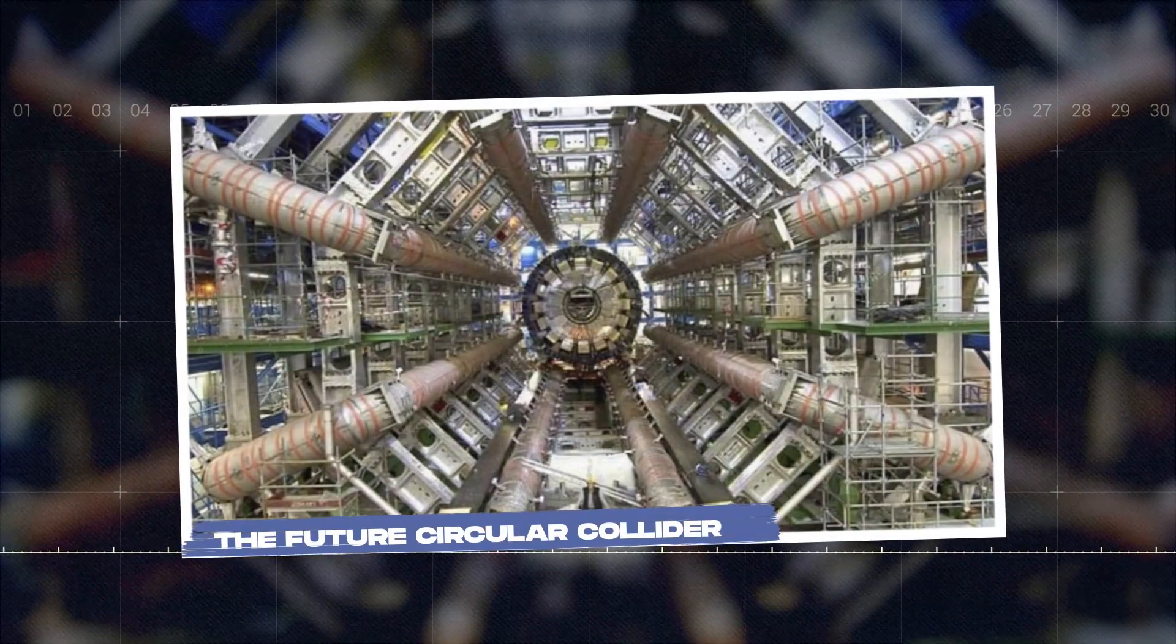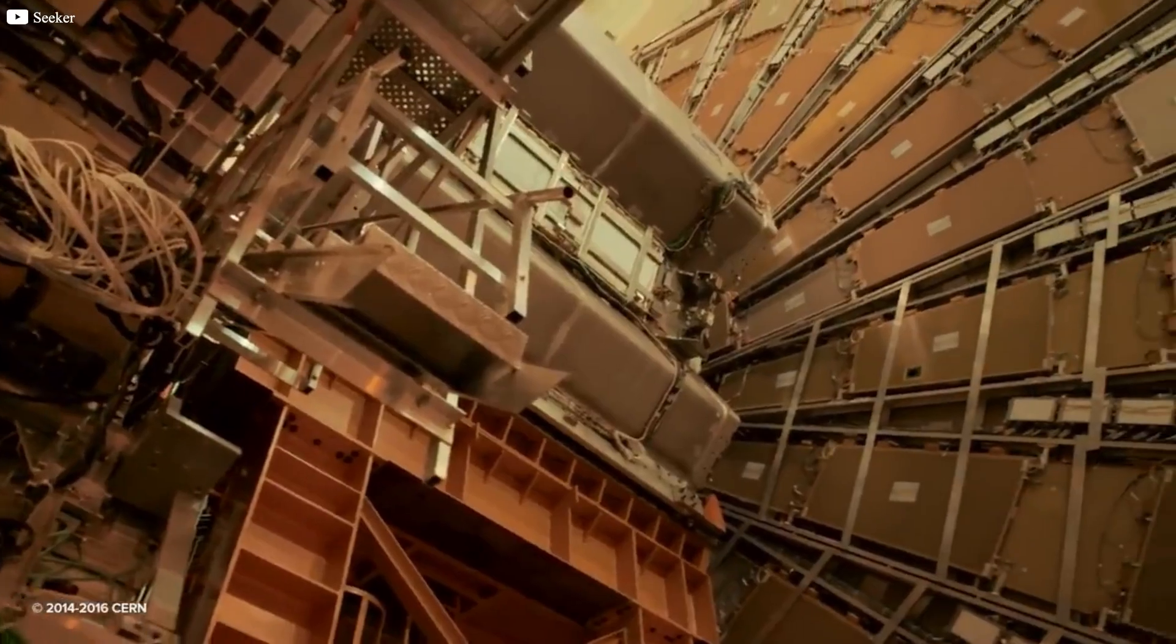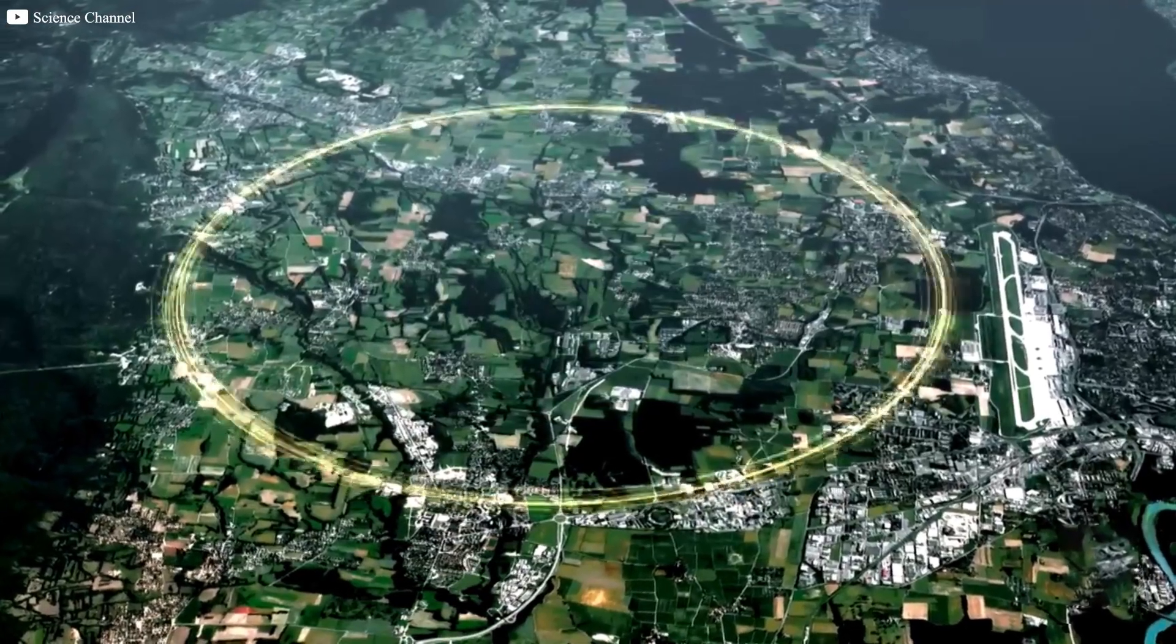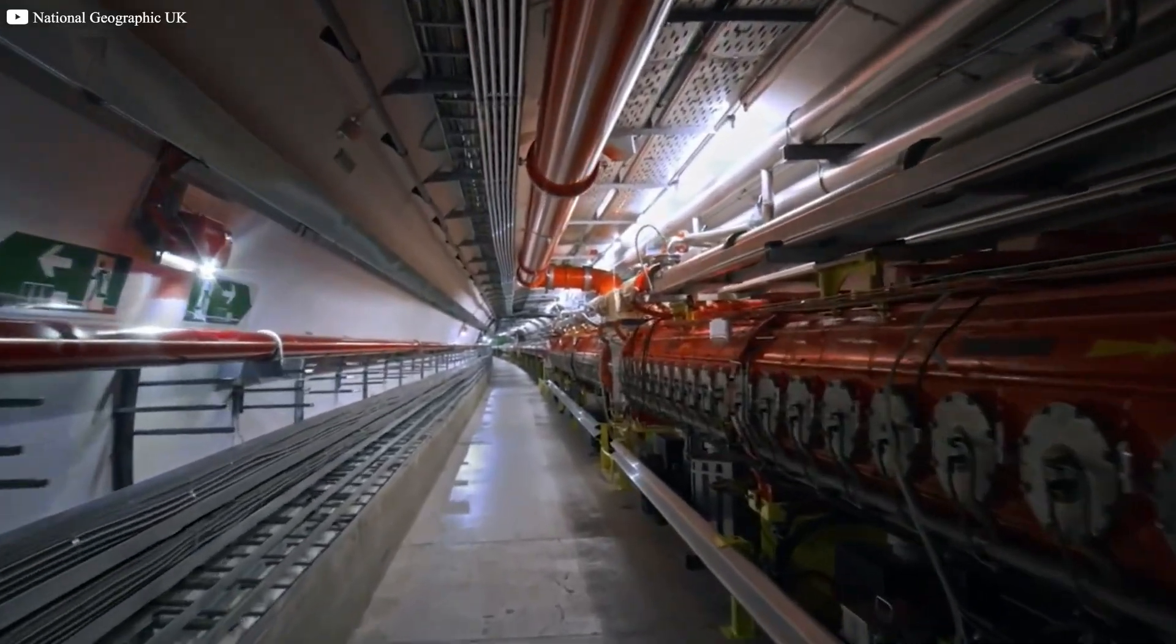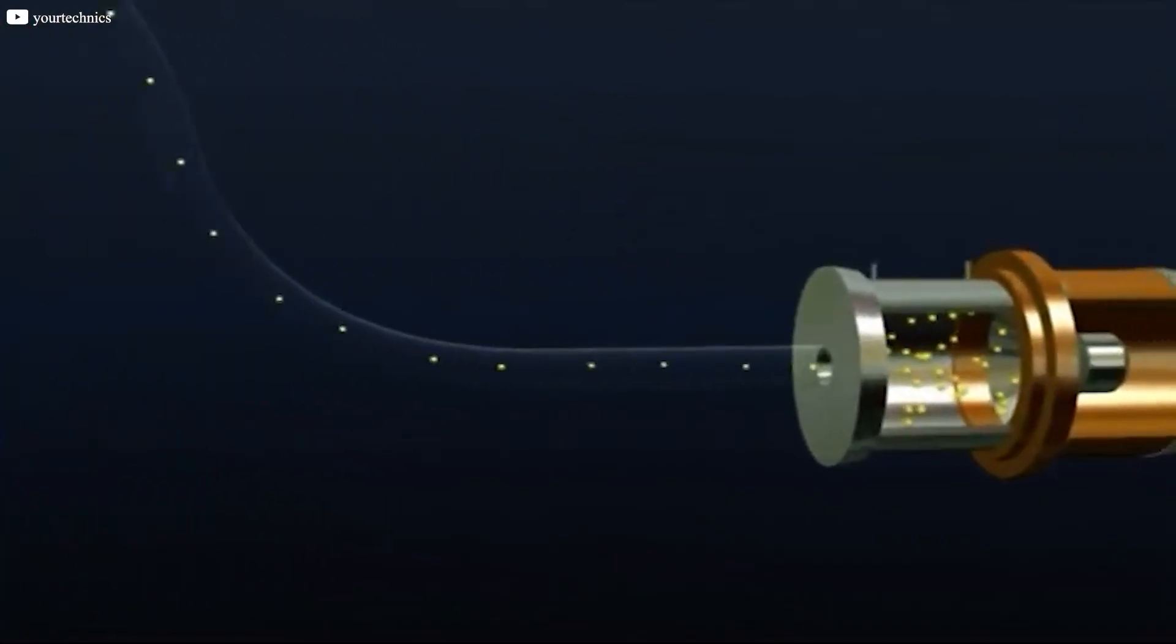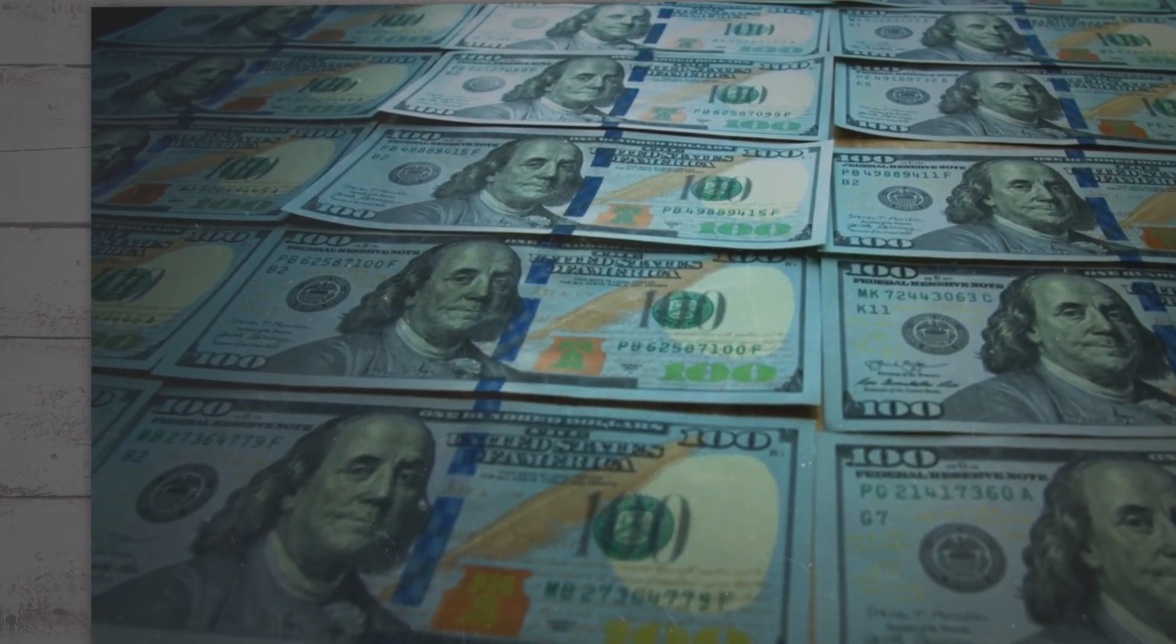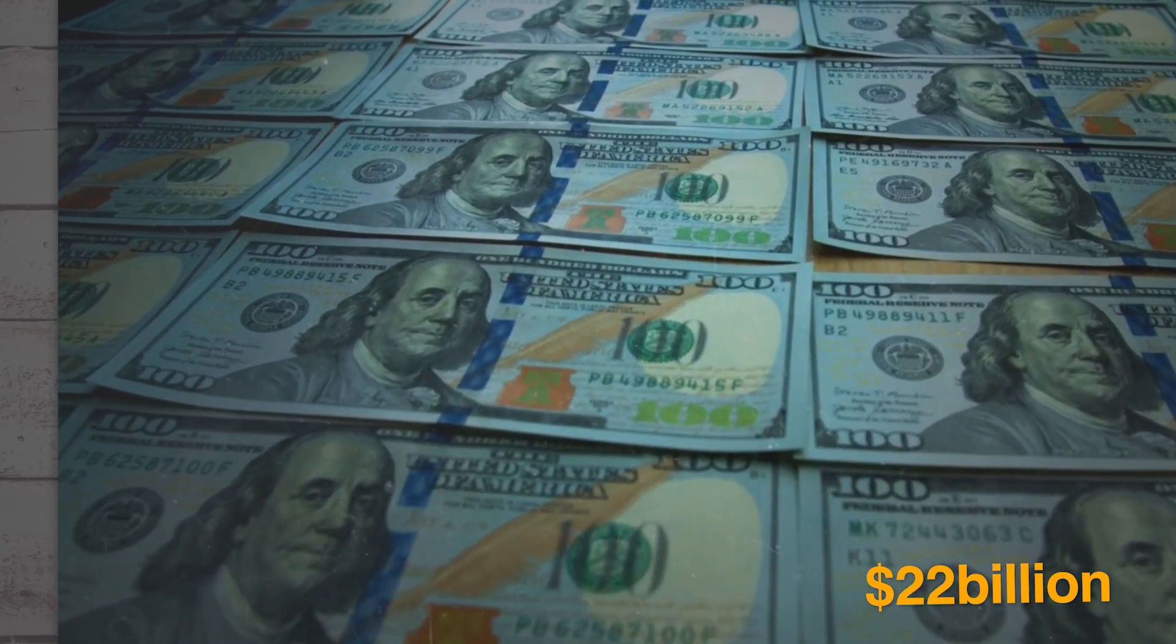The Future Circular Collider. The Large Hadron Collider is not the end of the story. At CERN, plans are already drawn for something even larger. It is called the Future Circular Collider. Instead of a 27-kilometer ring, this one would stretch to a full 100 kilometers beneath the ground. Its goal would be to smash particles together at 100 tera electron volts, six times more powerful than today's record. The price tag is breathtaking, around $22 billion, and the timeline reaches to the middle of this century.